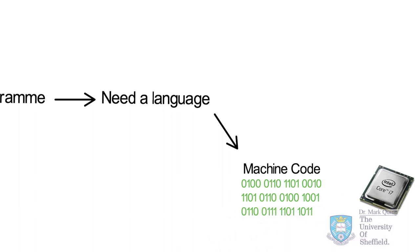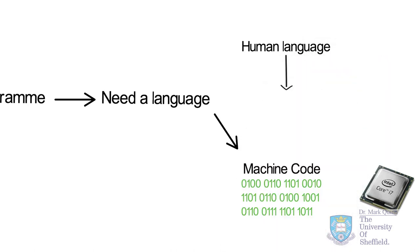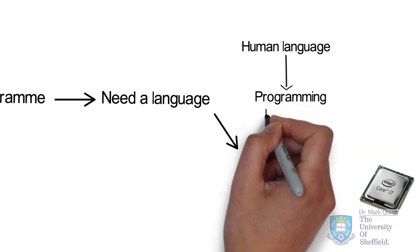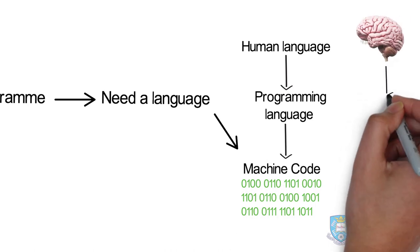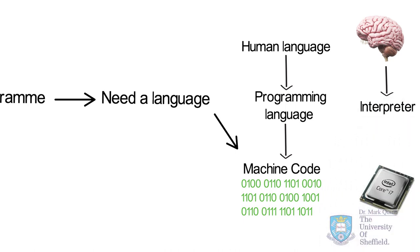Obviously it would be a big inconvenience for any human to directly communicate with a computer CPU in zeros and ones, so we need an intermediate language. This is what we typically refer to as the programming language. The programming language is essentially an interpreter between the human brain and the computer brain. It translates instructions written in a human-readable language to the machine code — the zeros and ones — that the computer CPU can understand.